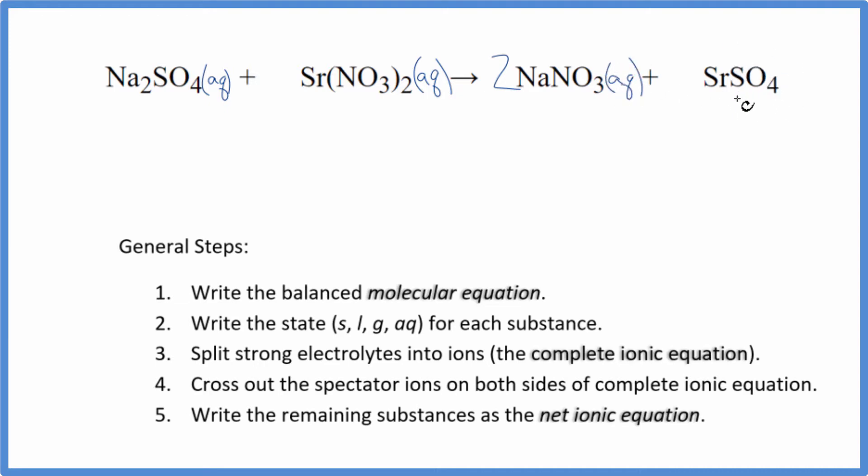And then strontium sulfate. Sulfates in general are insoluble. There are a few exceptions, like sodium sulfate and potassium sulfate. But strontium sulfate, I'm going to say that is insoluble. So we write S. It's going to be a solid. These things react. This falls to the bottom of the test tube. So this is a precipitation reaction, and we have this solid.